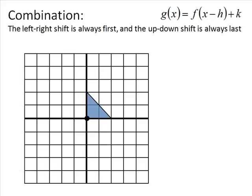What's fun is when you combine these. This is important to remember — we're going to use it whenever we add even more different kinds of transformations. Anytime you do any transformation, the left-right shift is always first, and the up-down shift is always last. Any other transformation you learn is going to go somewhere in between.